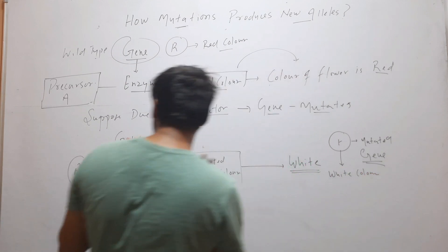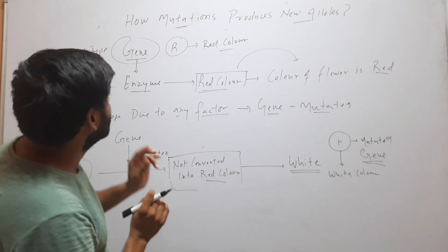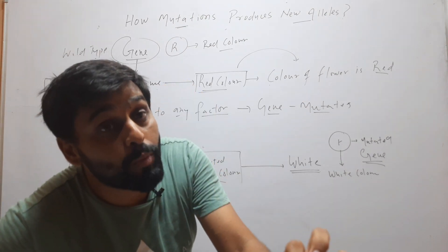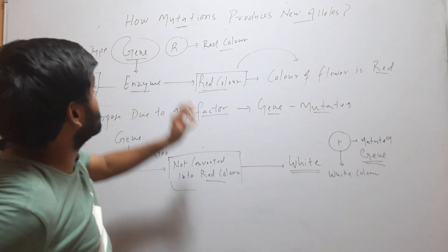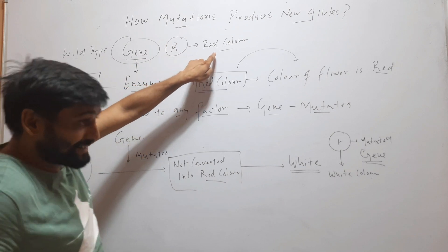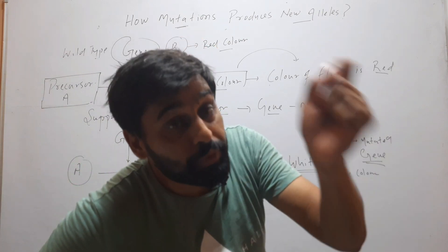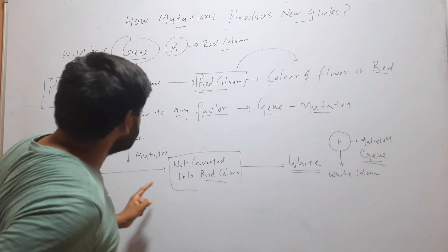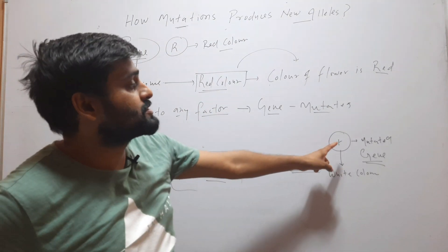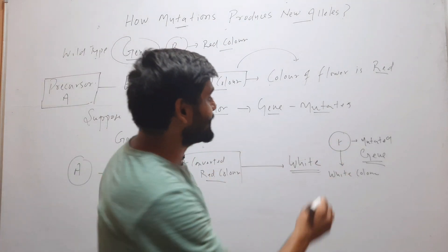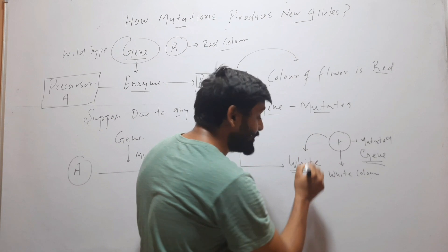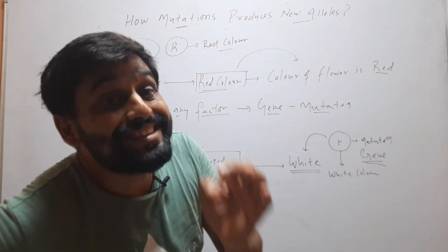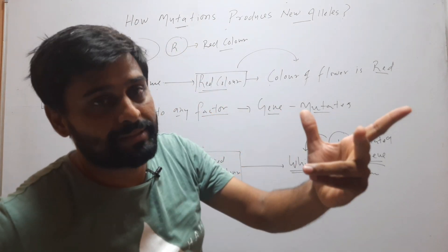So before mutation actually occurred, we had only one form of the gene — capital R — causing red color. But now mutation has produced another allele, small r, that causes white color. In this way you can see how mutation creates new alleles.